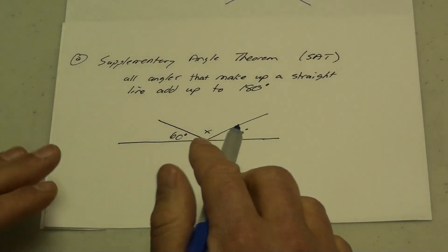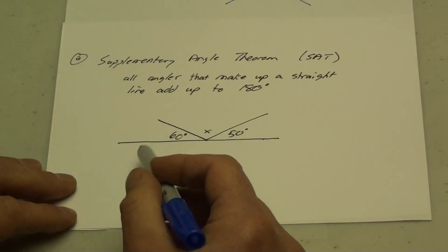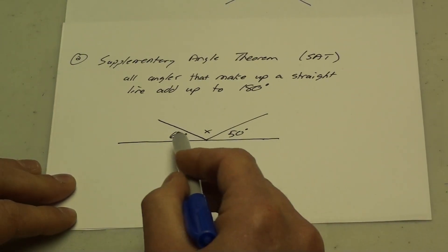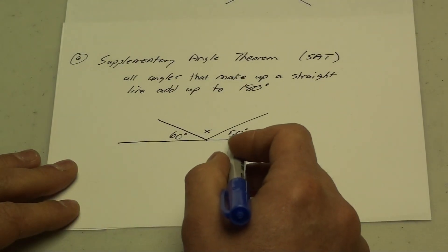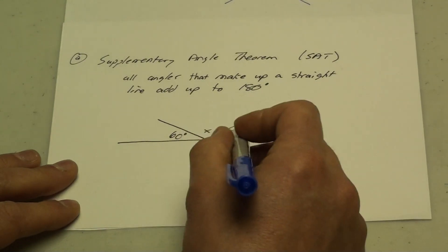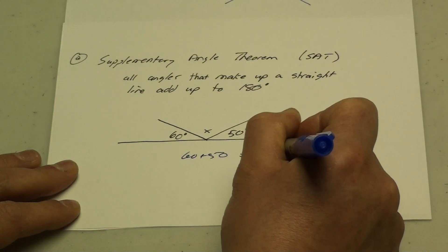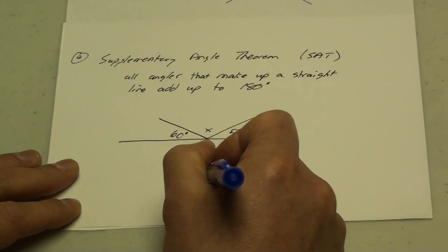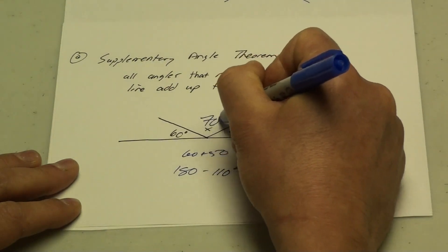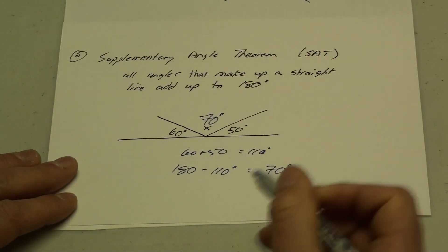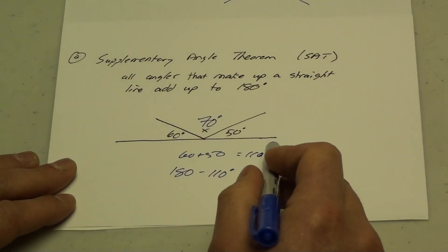The Supplementary Angle Theorem is when angles make up a straight line and add up to 180 degrees. So here I have a straight line along the bottom, and all of these angles have to add up to 180 degrees. If I have a 60 and a 50 — 60 plus 50 is 110 — and I take 180 and subtract that 110 degrees, that will leave me with a missing angle of 70 degrees right in the middle. That was because of supplementary angles, where they all have to add up to 180 degrees.